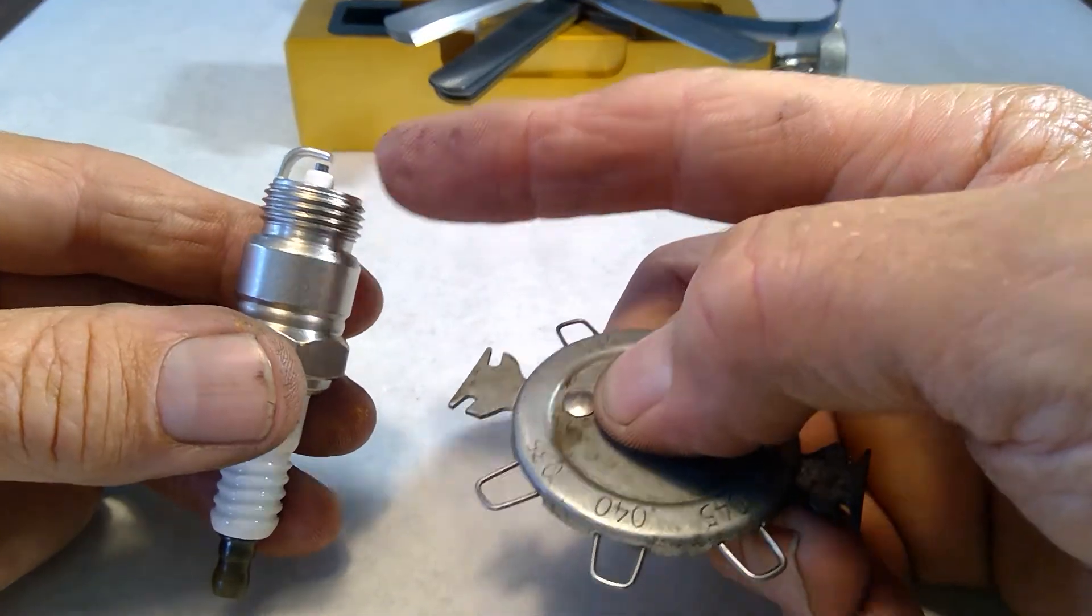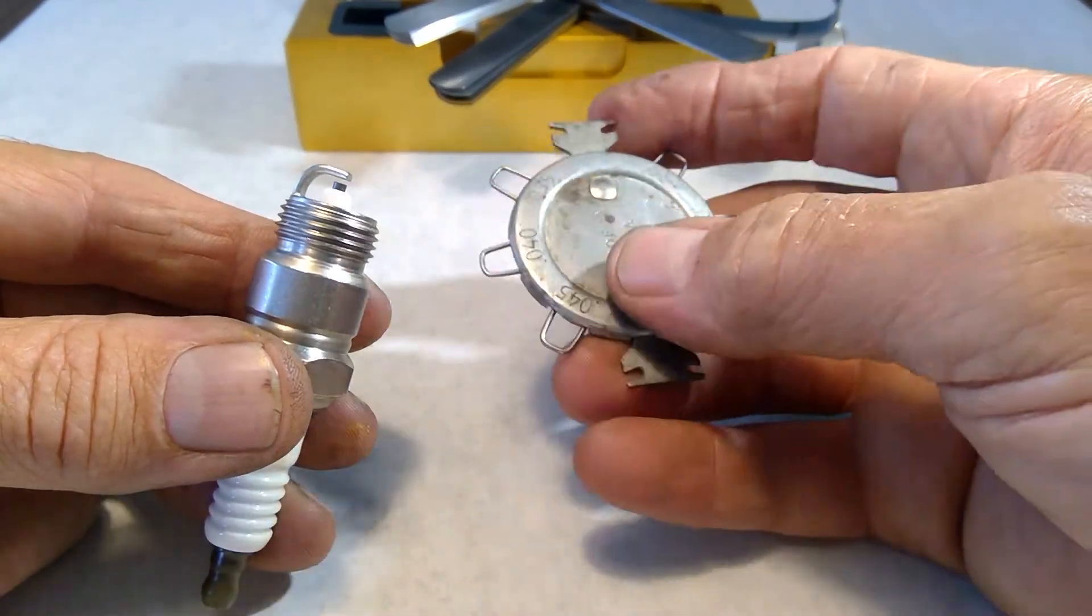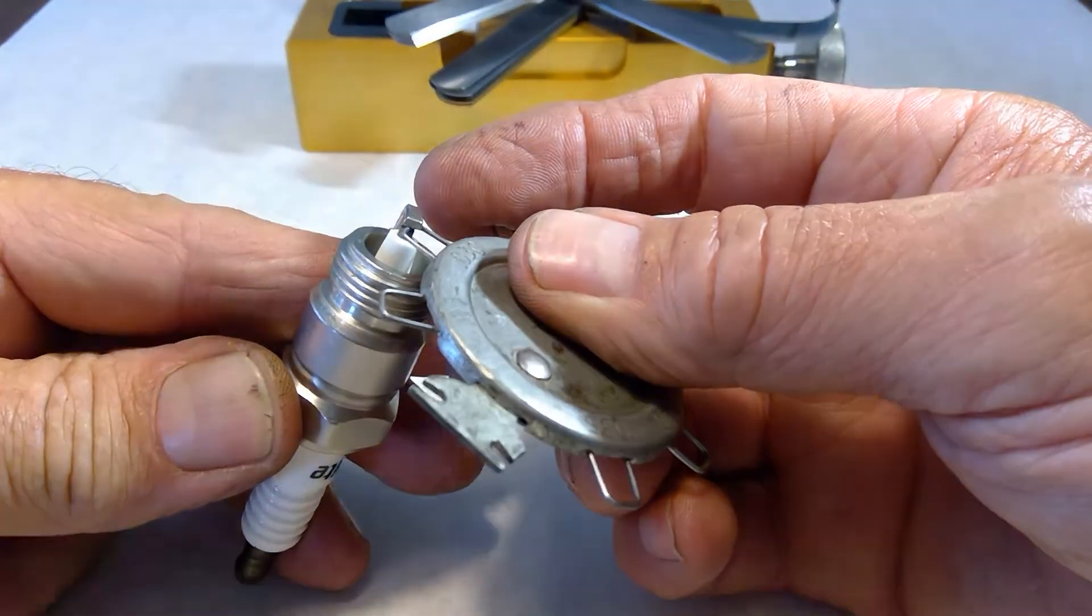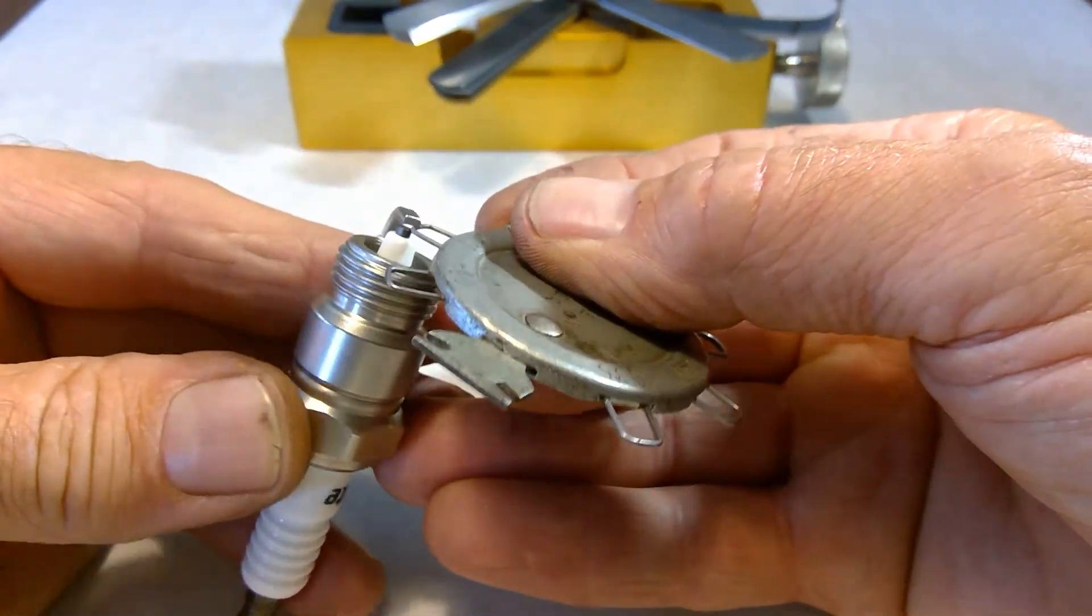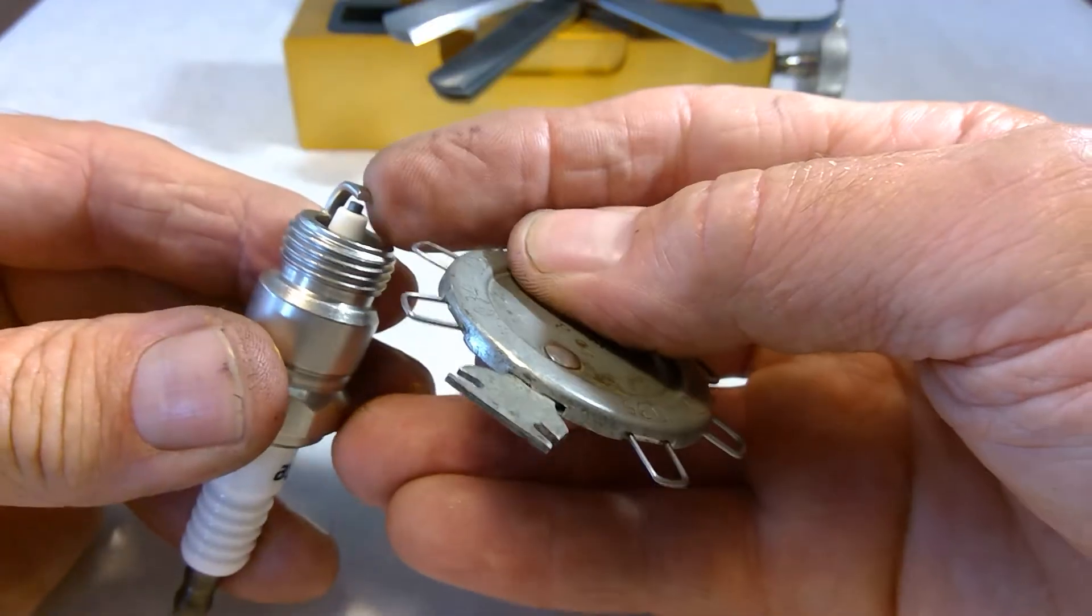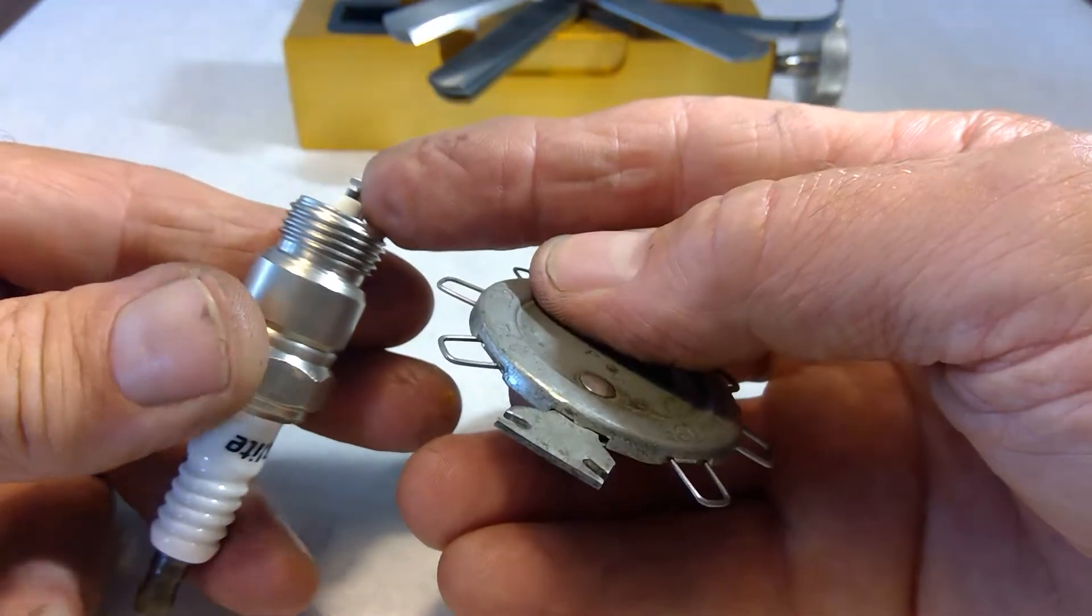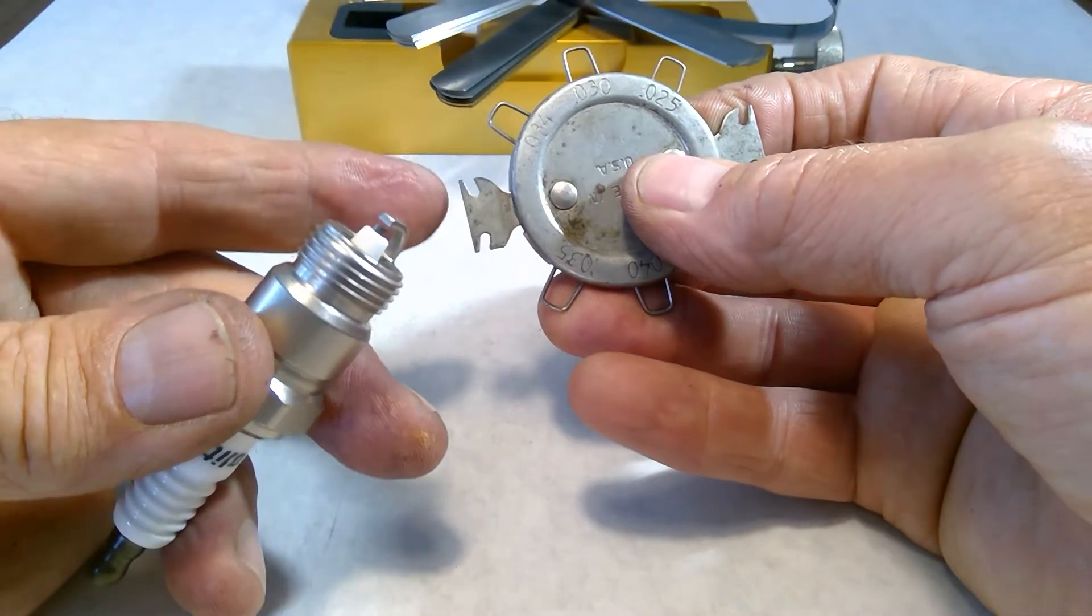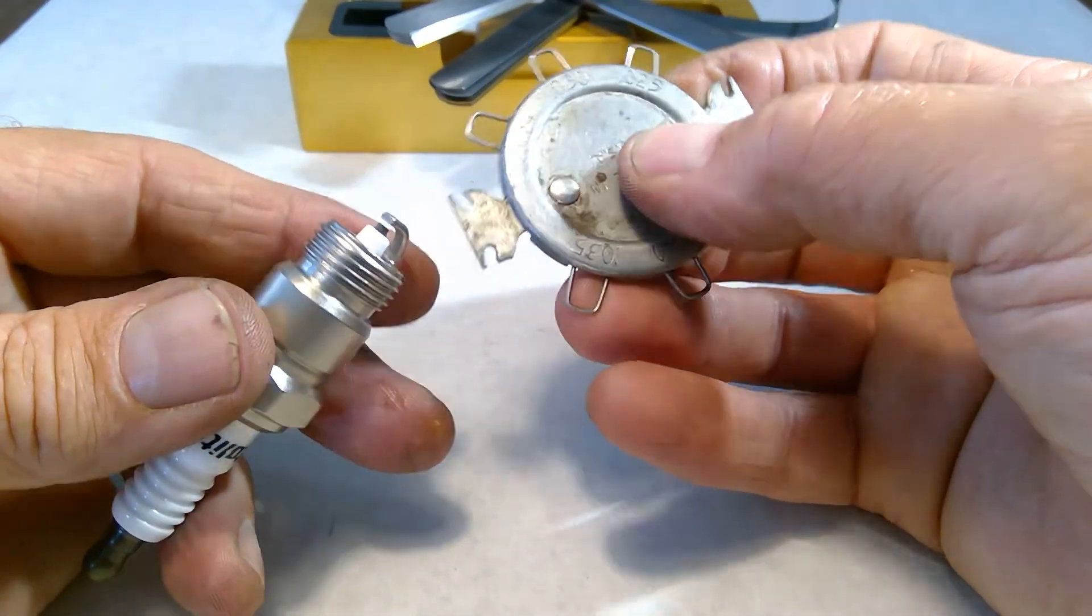So, this spark plug should be at 40 thousandths of an inch. I'm going to start by going to this 30 thousandths, and that does not go through there easily, so I know that I need to open that gap up to get it to the proper 40 thousandths of an inch measurement. Now, I can use this right here to do that.